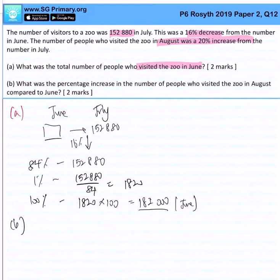So let's find out how many visitors are there in August first. In August we realize that there's a 20% increase from July, so if you want to find out a 20% increase...